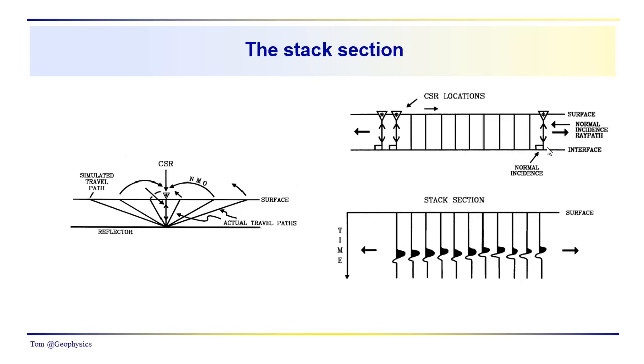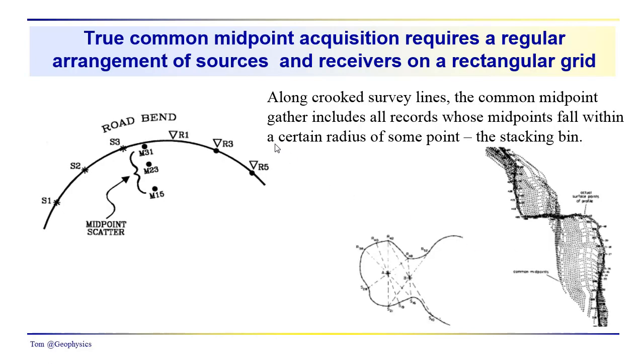The ray path comes down, strikes the interface at a right angle, and is returned back to the receiver. This would be the stack section. We're just showing a little wavelet here to illustrate something more realistic. We're seeing a reflection event from an approximately flat surface with all arrival times equal to 2h over v, two times the thickness of the layer. These are two way times, the down and up time.